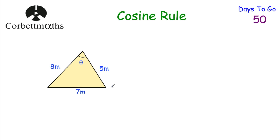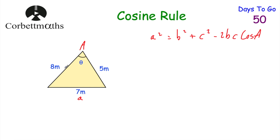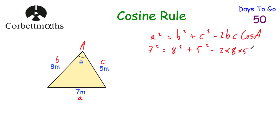Here's a triangle with sides of 8 metres, 5 metres, and 7 metres, and we want to find the size of angle θ. Writing down the cosine rule: a squared equals b squared plus c squared minus 2bc cos A. The angle we want is θ, so that's capital A. The side opposite it — little a — is 7. Our b and c can be 8 and 5 in either order. It doesn't matter which way around b and c are, but little a must be opposite capital A.